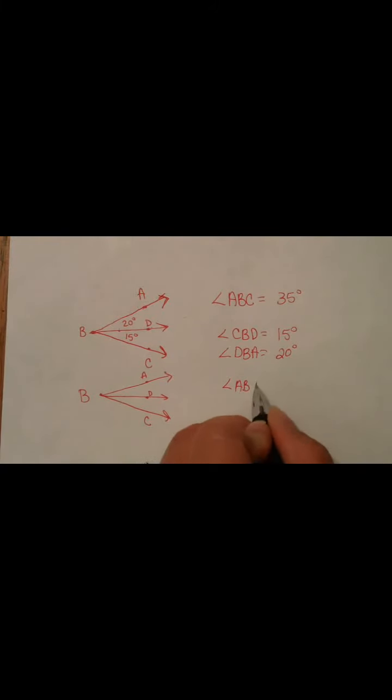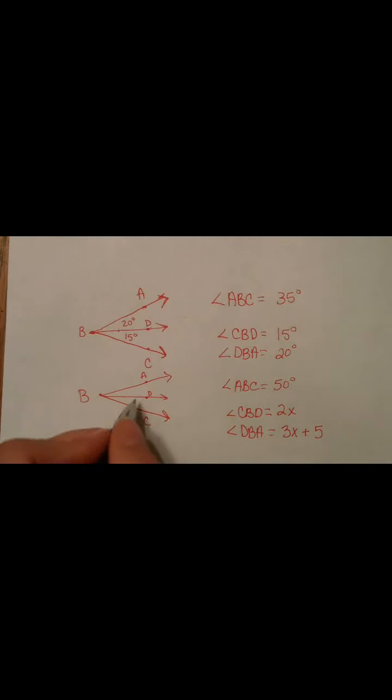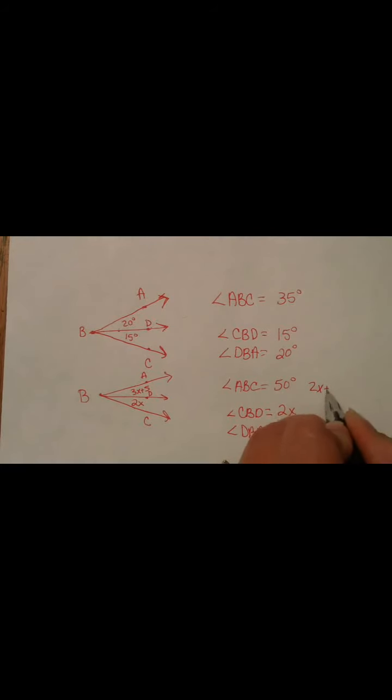Now, what if we say Angle ABC is equal to 50 degrees and Angle CBD is equal to 2X. And Angle DBA is equal to 3X plus 5. Well, it's the same thing that we did here. So, this angle from CBD is 2X. And this angle, DBA, is 3X plus 5. So, if we go 2X and then another 3X plus 5, then ABC is going to be 2X plus 3X plus 5. And the whole angle equals 50 degrees.